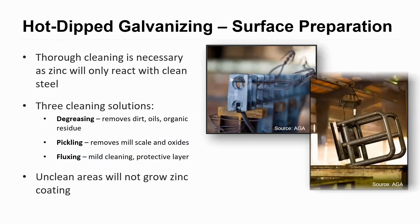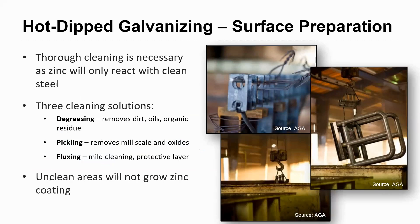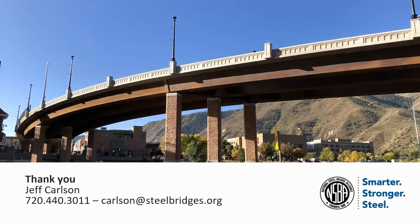Surface preparation is extremely important — degreasing, pickling, and fluxing are all part of the process and are absolutely required before the steel is dipped into the zinc bath. Anything that's not clean will not grow that zinc coating. This is governed by the American Galvanizing Association (AGA), who have a lot more information on this. Galvanizing is a very common use especially for shorter span bridges where the girders can be dipped in one pass, which helps from a cost perspective. All these systems have their time and place depending on your use case.